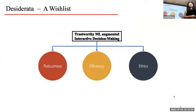Today I'll talk about a wish list of trustworthy machine learning models, and specifically I'll focus on robustness, efficiency, and ethics. I'll talk about the challenges associated with each of them and our solutions to tackle these challenges.